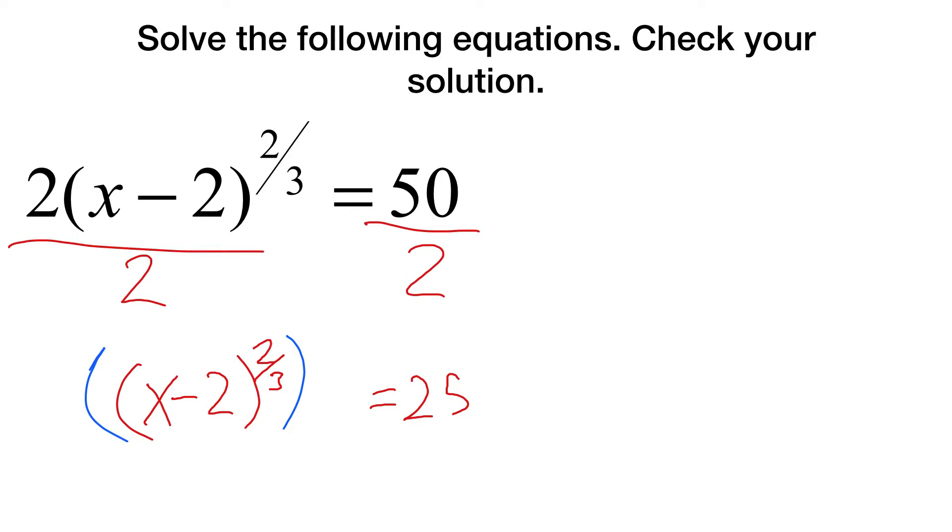Now at that point, I'm going to raise... I want to get this to be like it's being raised to the first power, because if it's to the first power, I can take away the radical. I can take away the exponent completely. So the way that you get 2 thirds to become 1 is you multiply it by its reciprocal. So we are going to raise this to the 3 halves power. Now on this side, that becomes x minus 2. Now let's check on the other side. If I do the square root of 25 cubed, that becomes 5 cubed or 125.